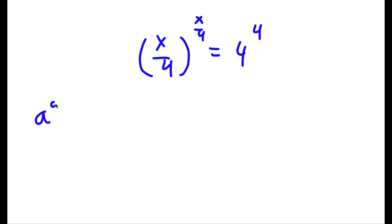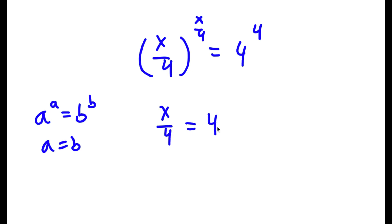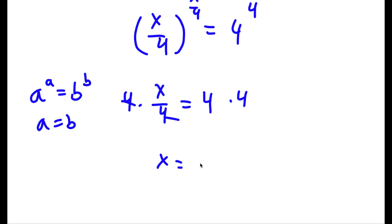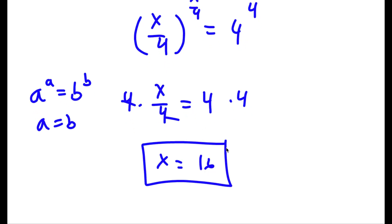And if I have something in the form a to the power of a is equal to b to the power of b, this means that a is equal to b. So in this case, x over 4 is equal to 4. Now, if I multiply by 4 on both sides, these two cancel out, and I'm left with x is equal to 16. So this is my answer.